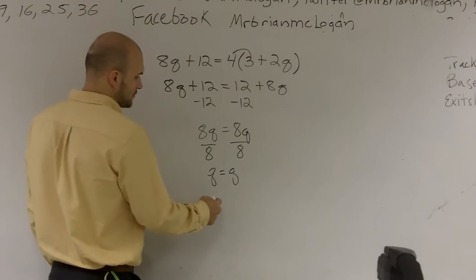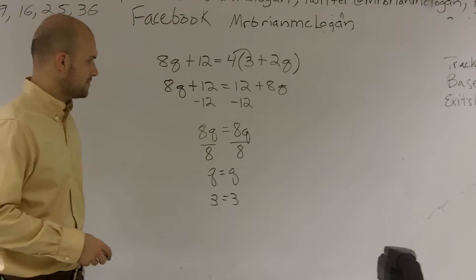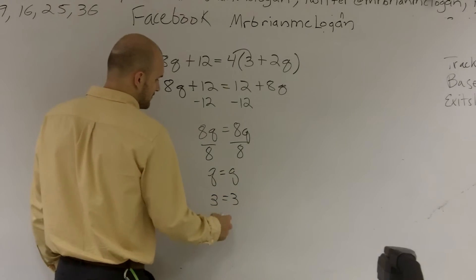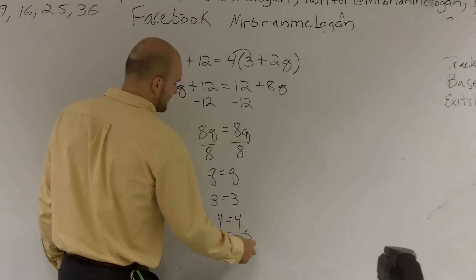Well, let's pretend q equals 3. Then 3 would equal 3. And is that true? Yeah, of course it's always true. What about if I did 4? It's equal to 4. Negative 5 is equal to negative 5.